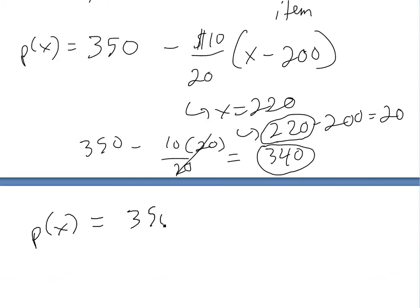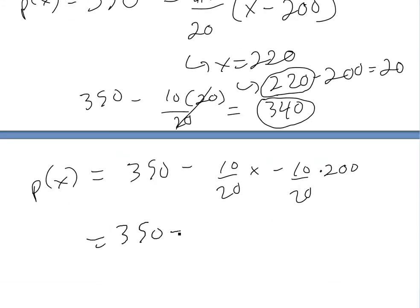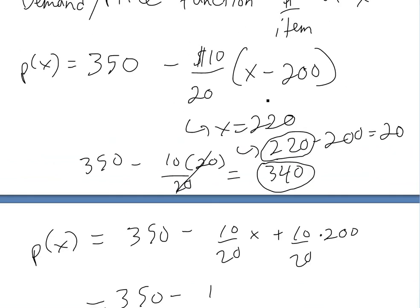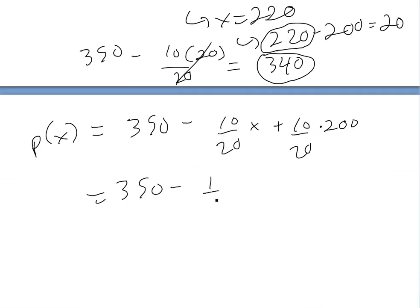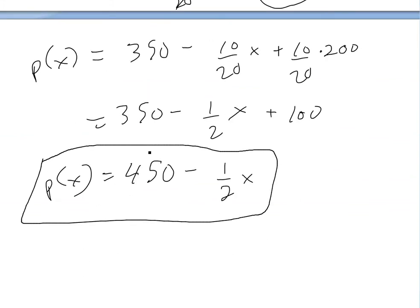Let's simplify the demand function. This will be 350 minus (10/20) times X, which is (10/20) times 200. Actually, there's a plus here - minus times minus is plus. So we have (1/2)X plus... 200 divided by 20 is 10, times 10 is 100. Simplifying further, we get 450 minus (1/2)X. This is our demand function. As you increase the amount of sales while including the rebate, the demand function decreases.